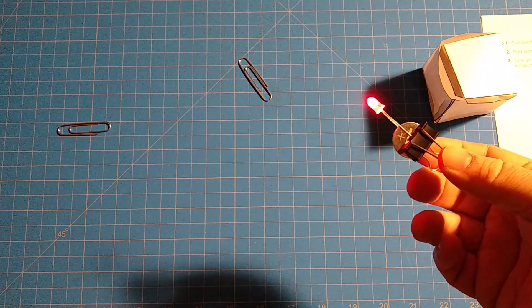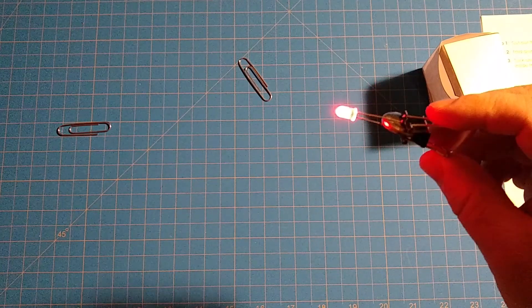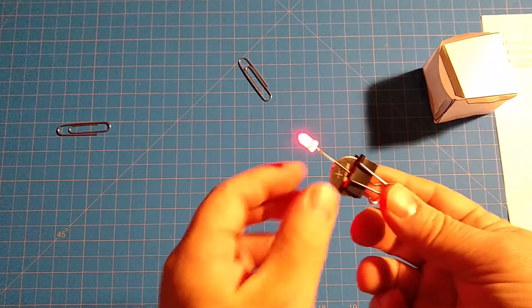Part of the binder clip is plastic, and plastic is an insulator which means it doesn't conduct electricity. So that's the part you want to touch the legs of the LED with, because if you touch metal to it, it'll short it out.